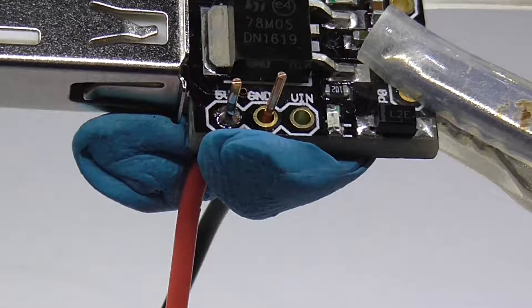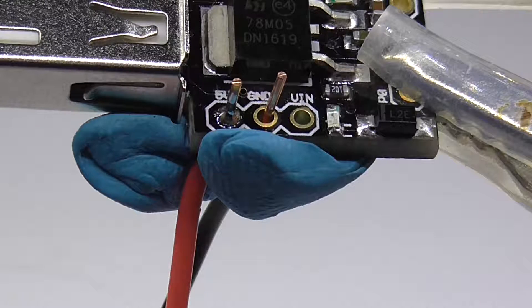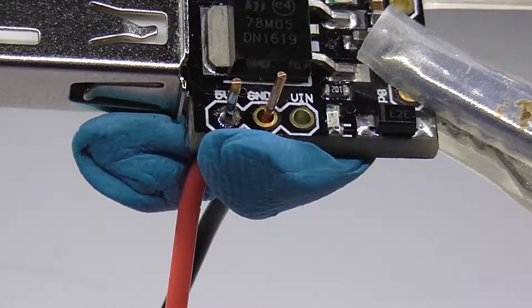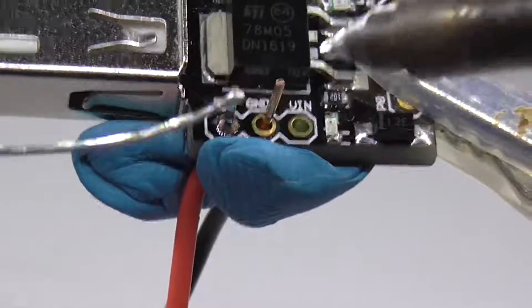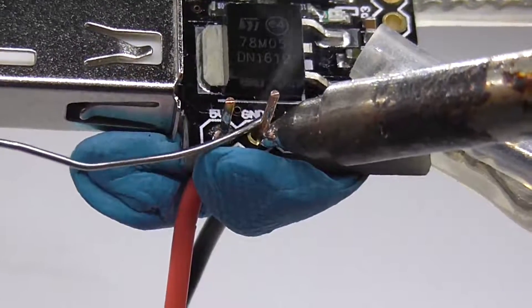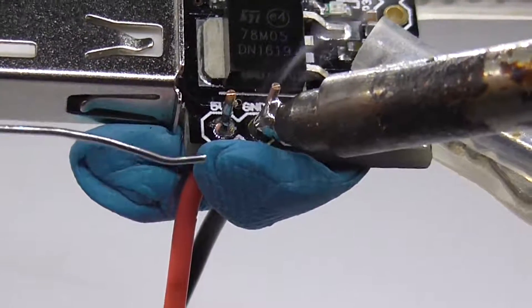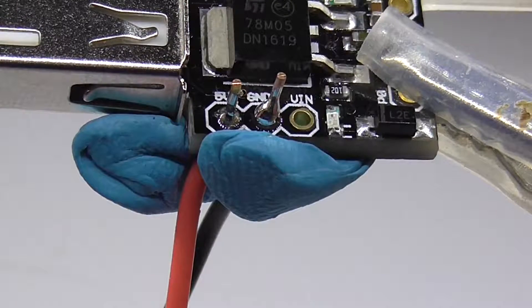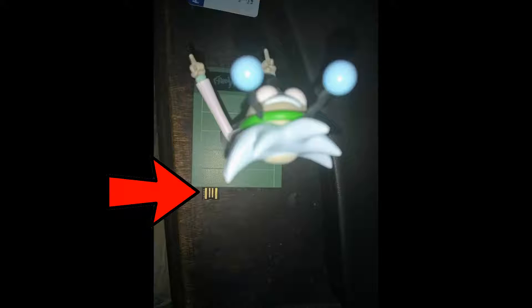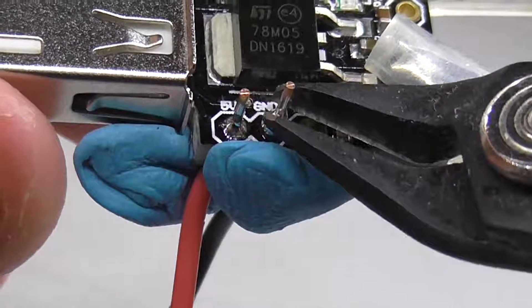I decided to solder some solid core wire to the 5-volt and ground pins to serve as power rails for the other components on the project. The USB connector of the DigiSpark itself will be the line-in for power, and that will be sticking out of the back of the figurine. A bit of junk in the trunk, if you will.